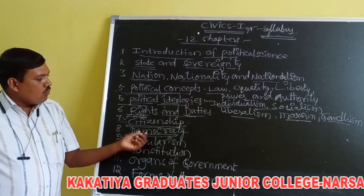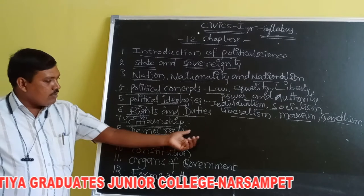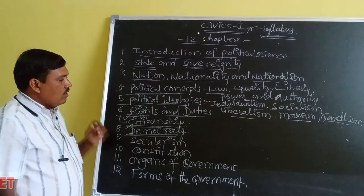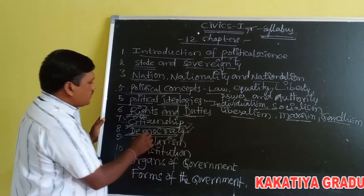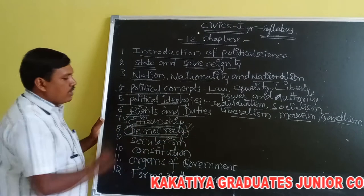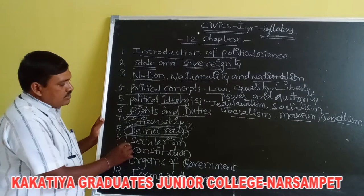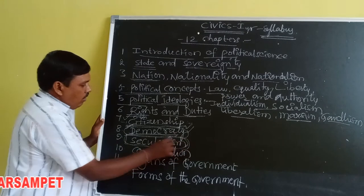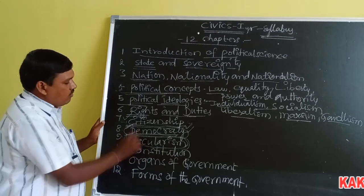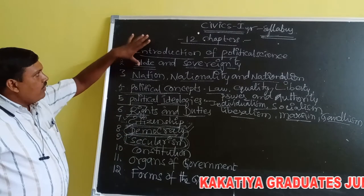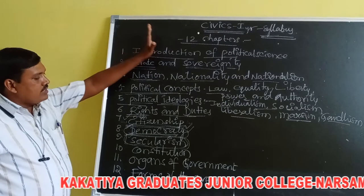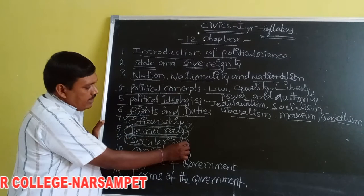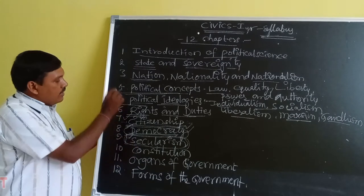The eighth chapter is Democracy, which we have heard about in previous classes. We will learn what democracy means, what kinds of democracy exist, how a democratic system is maintained in a country, and its benefits, merits, and limitations. The ninth chapter is Secularism — a secular state is one that does not support any particular religion. We will learn what secularism means and what a secular country is.